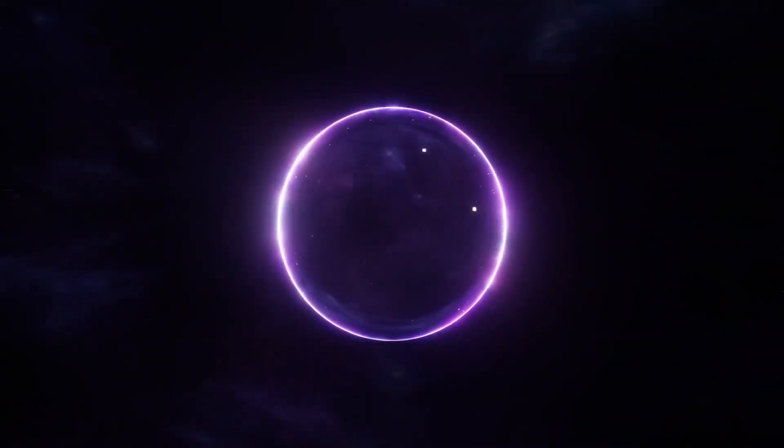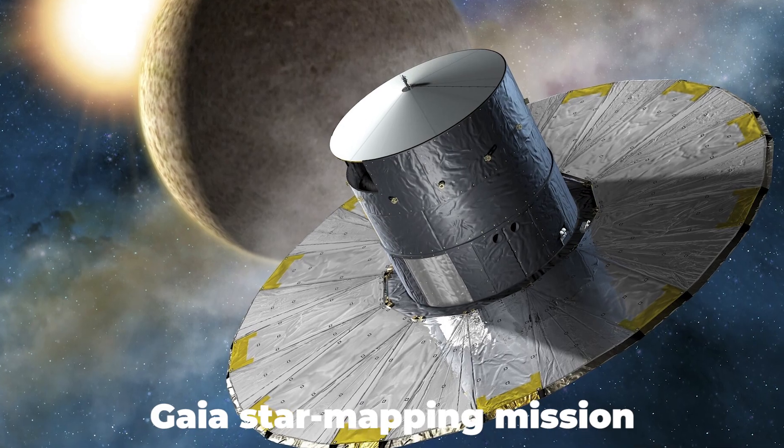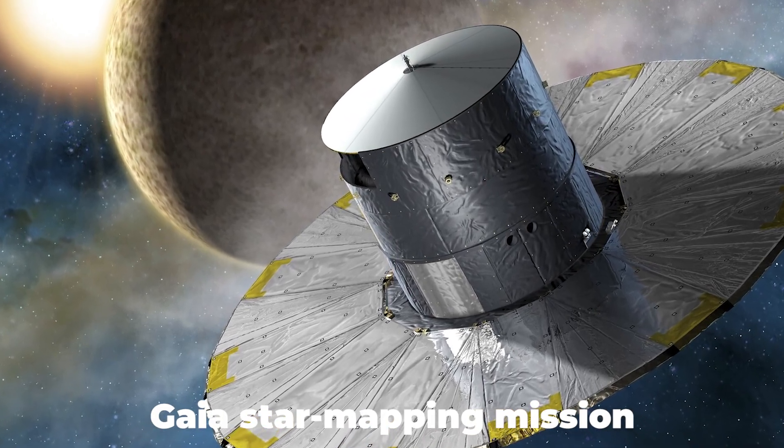Astrophysicist Scott Tremaine claims that if the gravity of the unseen planet causes the light from nearby stars to be bent, evidence may also be found in data from the European Space Agency's Gaia Star Mapping Mission.